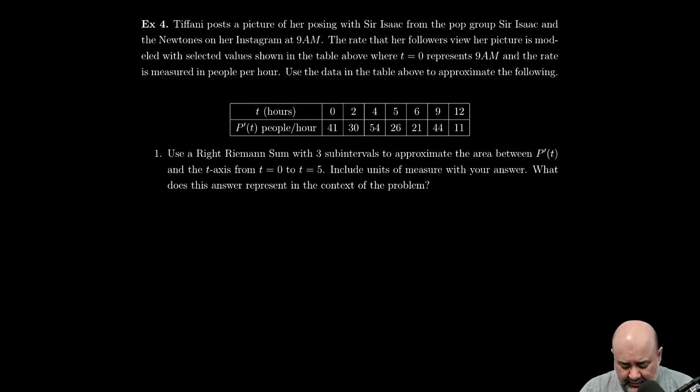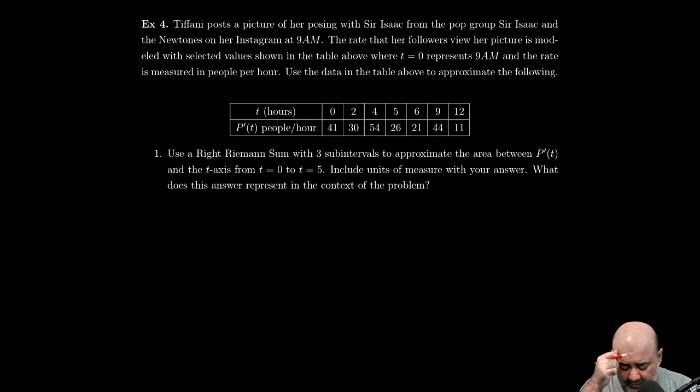Alright, continuing on. Tiffany posts a picture of her posing with Sir Isaac from the pop group Sir Isaac and the Newtones on her Instagram at 9 AM. The rate at which her followers view the picture is modeled with selected values shown in the table below, where t equals zero represents 9 AM. So this is 9 AM and then two hours later that'll be 11 AM, and so on.